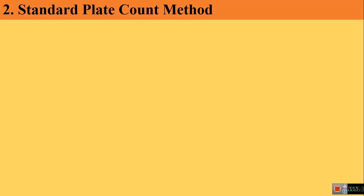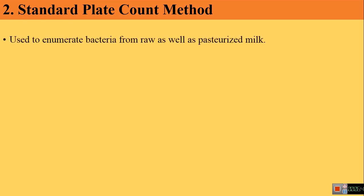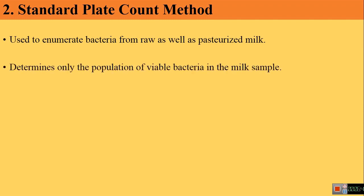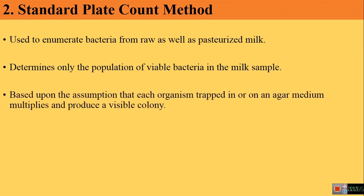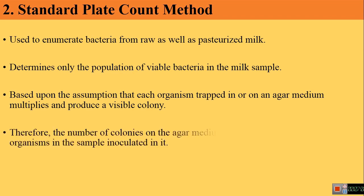The next method for microbiological examination of milk is the Standard Plate Count method (SPC). This method is used to enumerate bacteria from both raw and pasteurized milk. It counts only the number of viable bacteria in the milk sample, based on the assumption that each organism trapped in or on the agar medium multiplies and produces a visible colony. Therefore, the number of colonies equals the number of organisms in the sample.